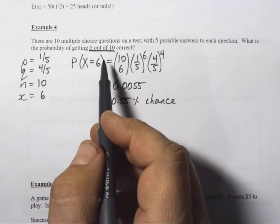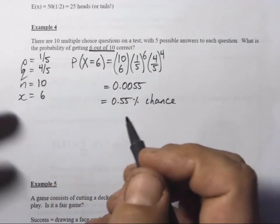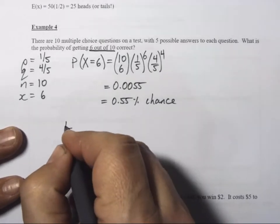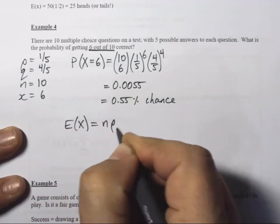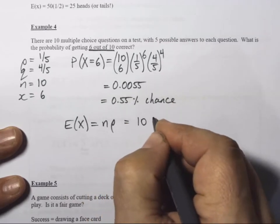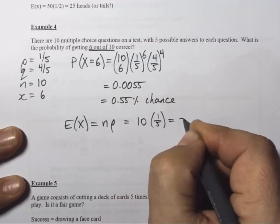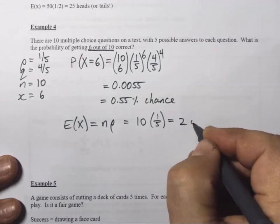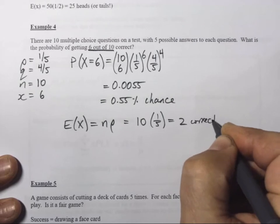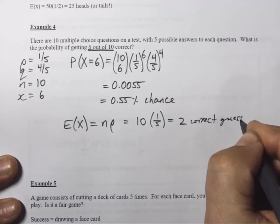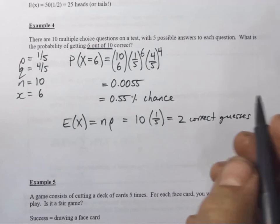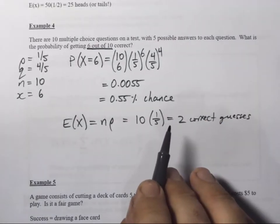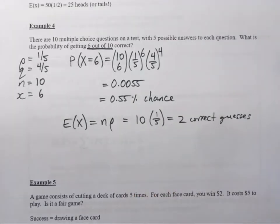You might guess 1 correct, you might guess 2 correct. In fact, let's figure out what the expected number of correct answers guessed would be. So, the EX here is N times P, which is 10 times 1 in 5, or 2. You would expect to guess 2 correct guesses out of 10 on average. That's the expected number of guesses you would expect to see someone guess on average.